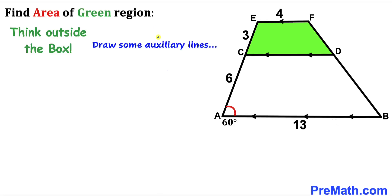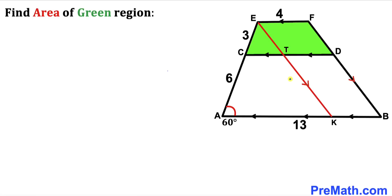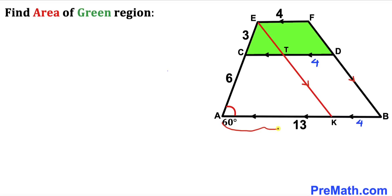Thinking outside the box, we draw auxiliary line EK parallel to line FB. This line passes through point T. Since EK and FB are parallel, EF = TD = 4 and KB = 4 as well. Since the whole side AB is 13 units and KB is 4, the remaining segment AK is 13 minus 4, which gives us 9 units.